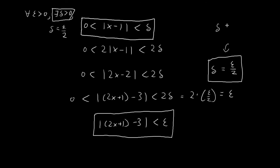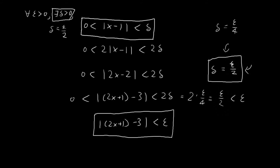Alternatively, I could have chosen something like delta equal to epsilon over 4 — an even smaller delta. You can see that this will only cost us an extra step: instead of the previous result, we'd have 2 times epsilon over 4, which equals epsilon over 2, which of course is smaller than epsilon. So it's much more natural to choose epsilon over 2, but just keep in mind that this choice is by no means unique. All we have to do is establish that there exists a delta such that this conditional statement is true.